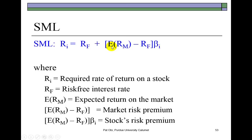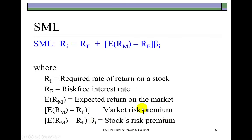This term is the risk premium of the market's portfolio. When we take the risk premium of the market portfolio and multiply it by the beta of the stock, we then call this the stock's risk premium. All the terms are defined here.